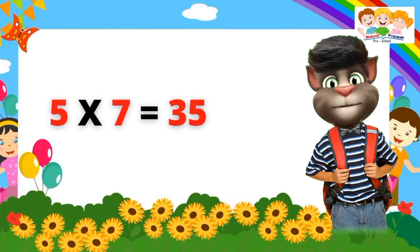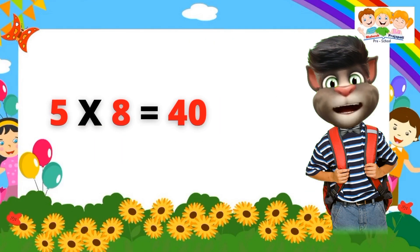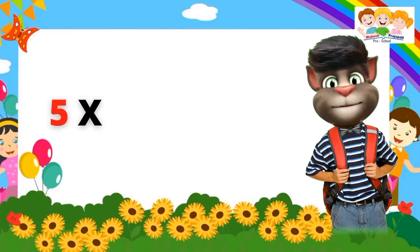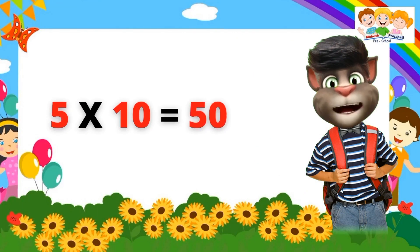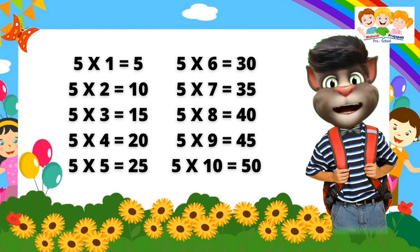Five seven's are thirty-five. Five eight's are forty. Five nine's are forty-five. Five ten's are fifty. Five one's are five. Five two's are ten. Five three's are fifteen. Five four's are twenty. Five five's are twenty-five. Five six's are thirty. Five seven's are thirty-five. Five eight's are forty. Five nine's are forty-five. Five ten's are fifty.